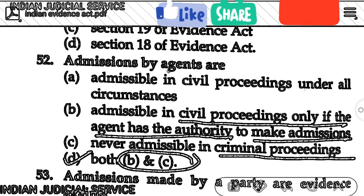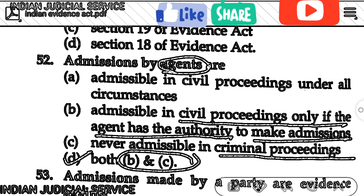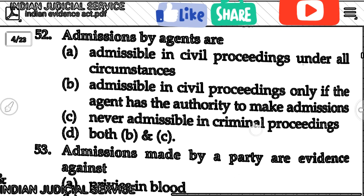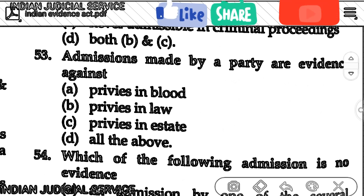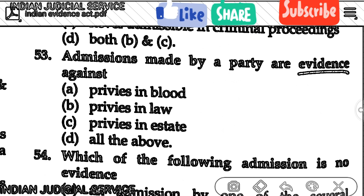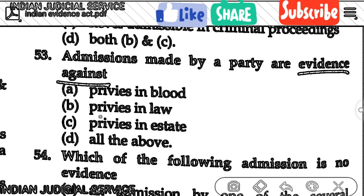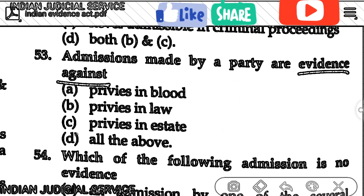Question number 53: Admissions made by a party are evidence against — previous in blood, previous in law, previous in state, or all of the above. The answer is all of the above.